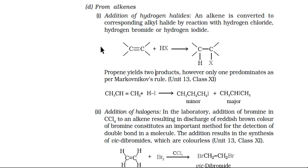Good morning students. We are back for our next reaction: methods of preparation of alkyl and aryl halides. We have discussed the preparation of alkyl and aryl halides by alcohol, by free radical halogenation, by electrophilic substitution reaction, as well as Sandmeyer and Gattermann reactions. In the case of Sandmeyer and Gattermann reactions, there is a modification also known as the Balz-Schiemann reaction, which gives fluorobenzene, as discussed in the last lectures.